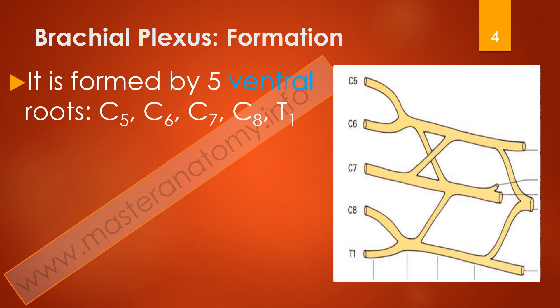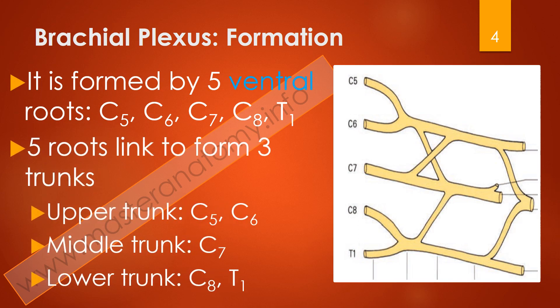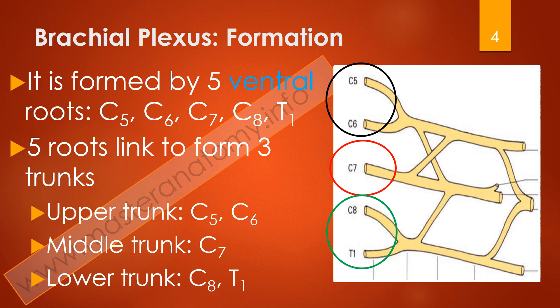This plexus is made up of five roots: C5, C6, C7, C8, and T1. These five roots merge to form three trunks. The upper trunk is made up of C5 and C6 roots. C7 forms the middle trunk and stands alone. The lower trunk, also called the inferior trunk, is formed by C8 and T1.